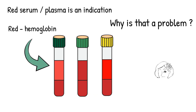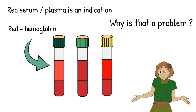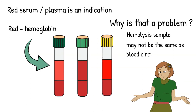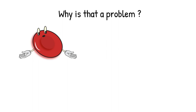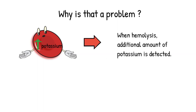Why is a hemolyzed sample not suitable for testing, especially for chemistry tests? If the red blood cells burst during specimen collection, the blood being tested is not the same as the blood circulating in the patient, leading to inaccurate test results. Inside the red blood cells there is a much higher level of potassium than in the plasma. If a hemolyzed sample is tested for potassium, the level will show that the patient has higher potassium than actually is, and may lead to a change in course of treatment. This can put the patient's health at risk.